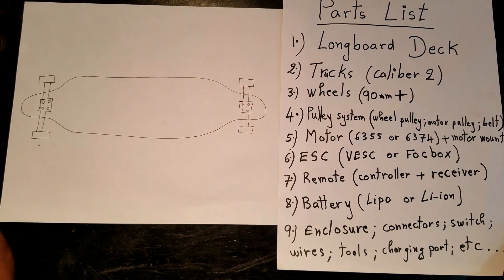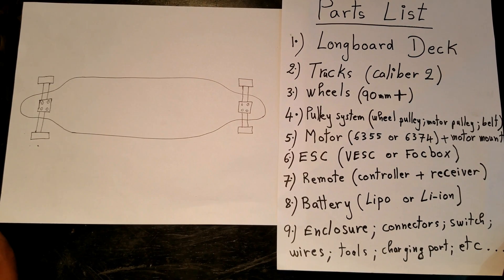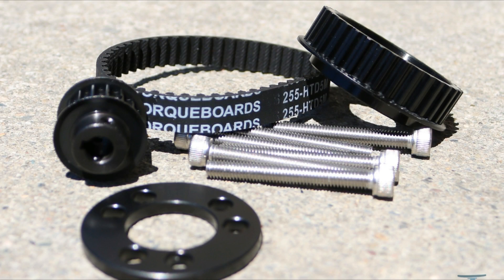Next on the list is a pulley system. A pulley system is basically the gearing. It's composed by the wheel pulley, the motor pulley, and a belt, also including screws and hardware to mount them.